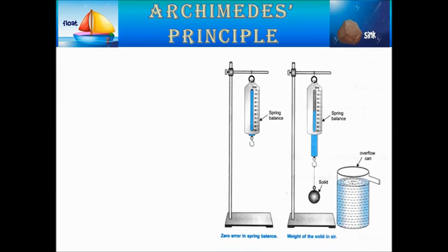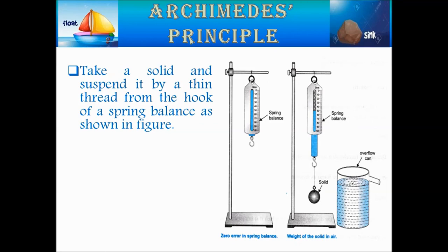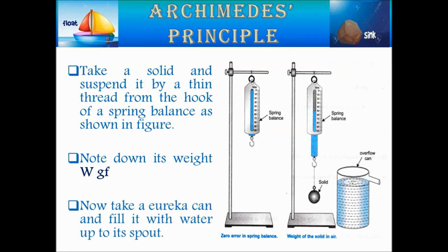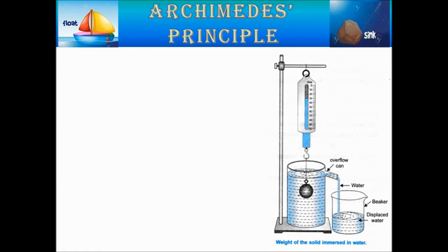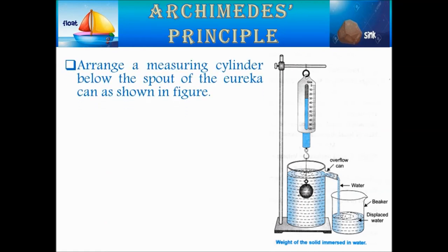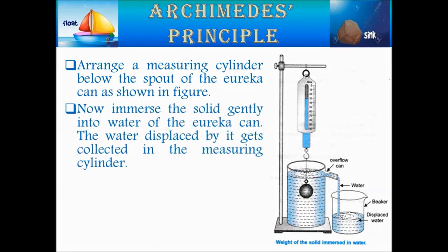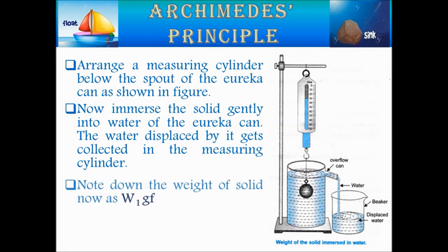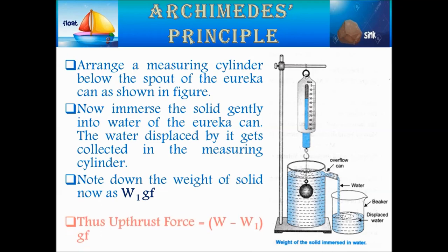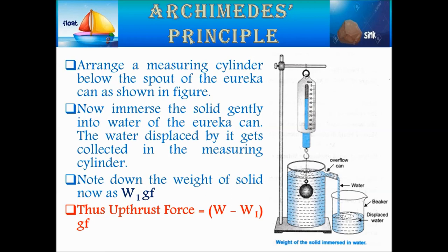Let us understand Archimedes principle through an experiment. Take a solid and suspend it by a thin thread from the hook of a spring balance as shown in the figure. Note down its weight as W gram force. Now take a Eureka can, fill it with water up to its spout, and arrange a measuring cylinder below the spout. Immerse the solid gently into the water of the Eureka can. The water displaced by it gets collected in the measuring cylinder. Note down the new weight of the solid as W1 gram force. According to Archimedes principle, the up thrust force is equal to W minus W1 gram force.